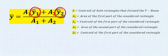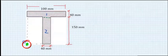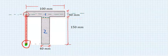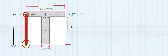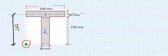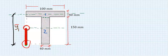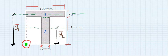Step number four: find the centroid of each part considering the reference points. If you split the first rectangle into two parts and consider the distance to the reference point, that becomes the centroid of the first rectangle. Similarly, if you split the second rectangle into two parts and consider the distance to the reference point, that becomes the centroid of the second rectangle.